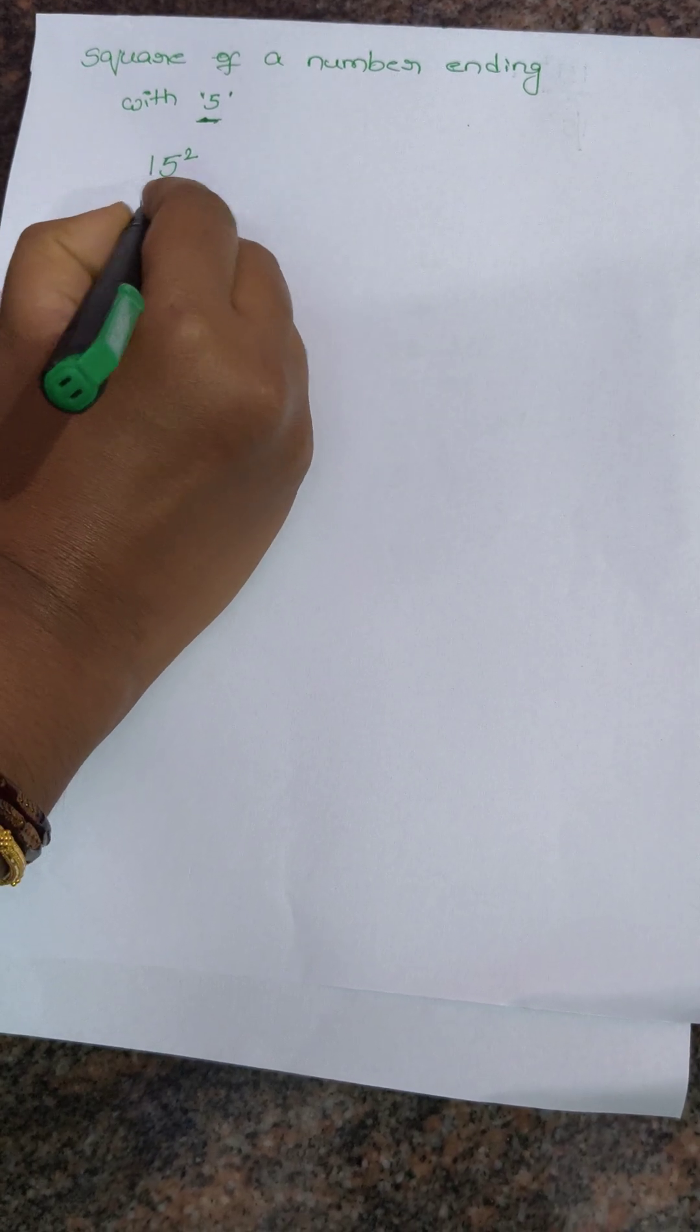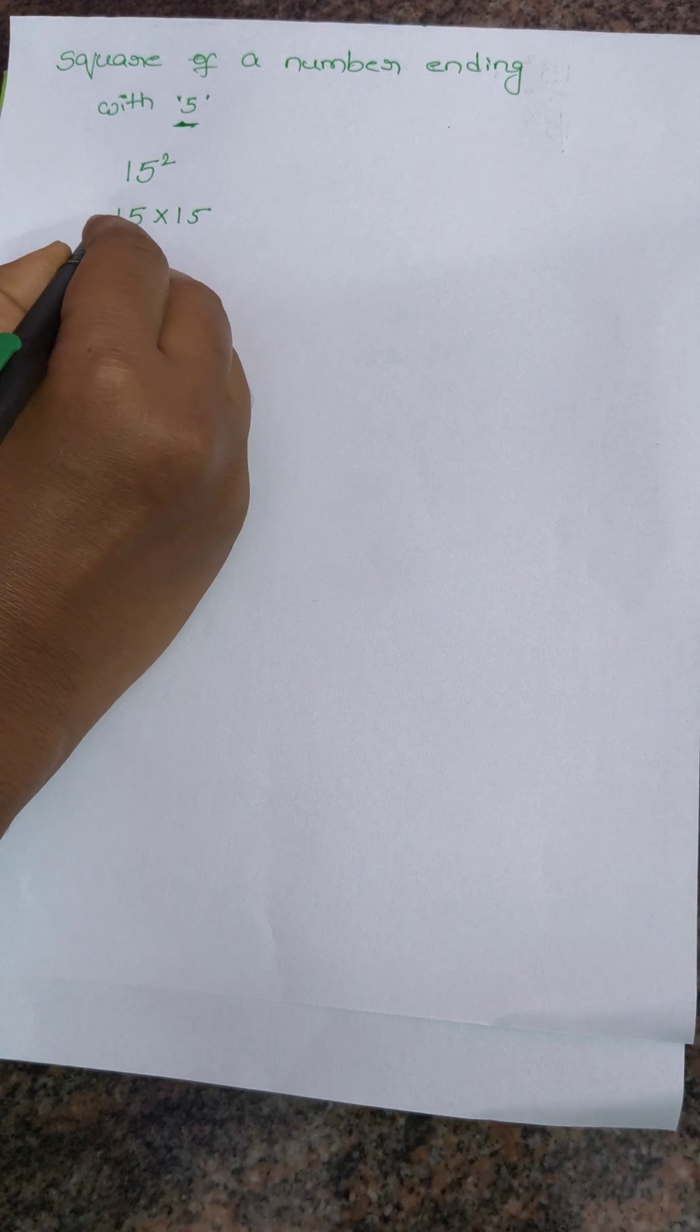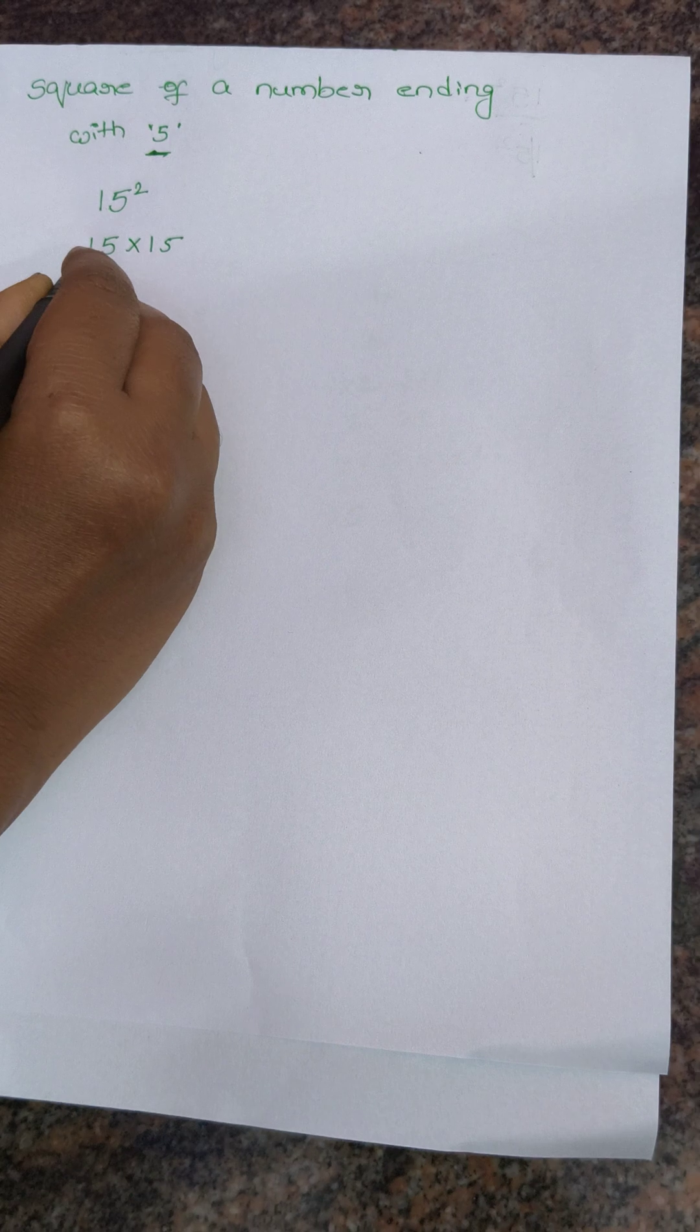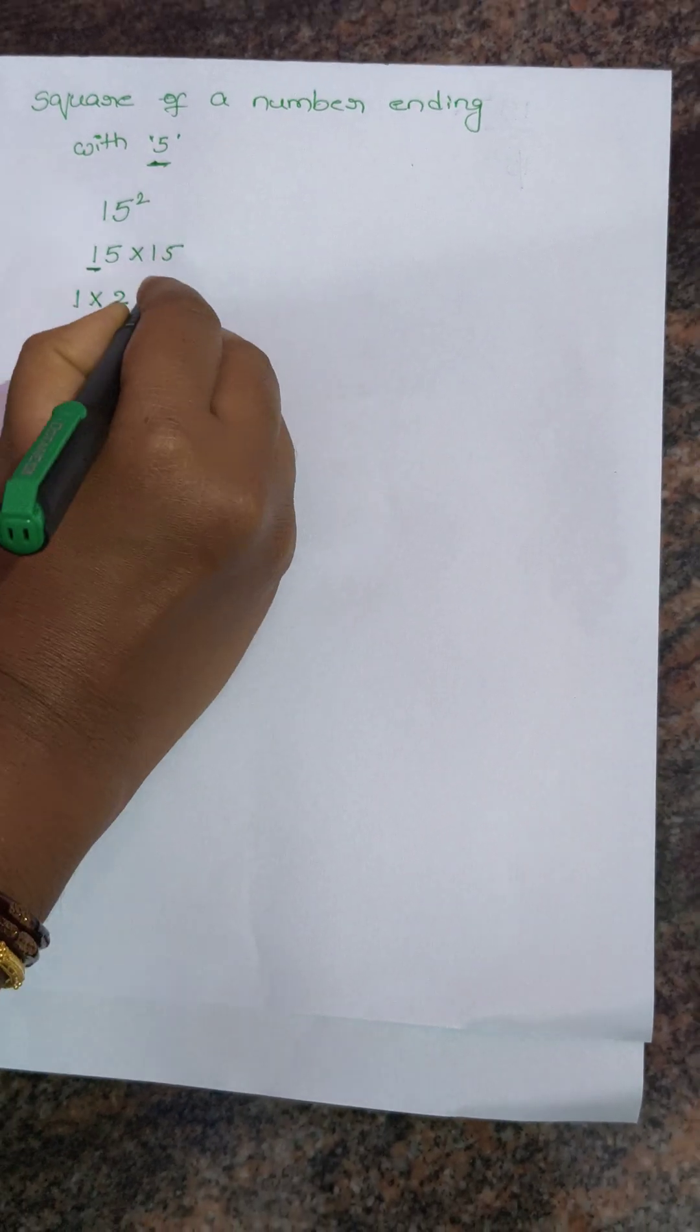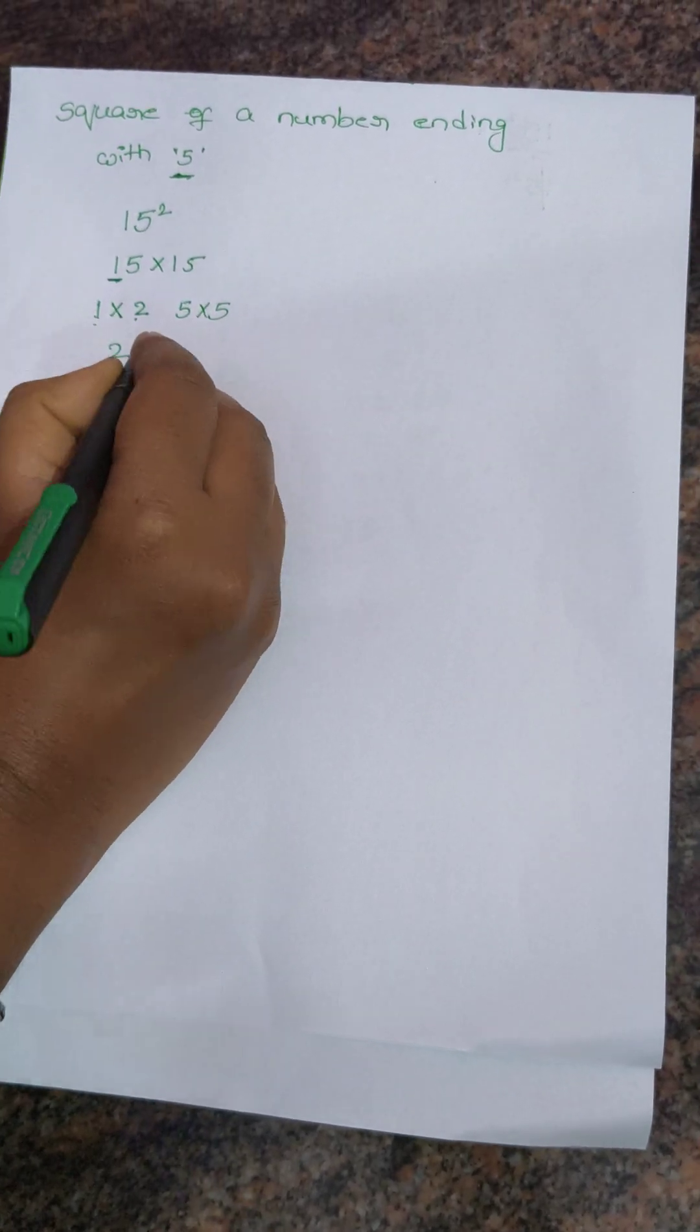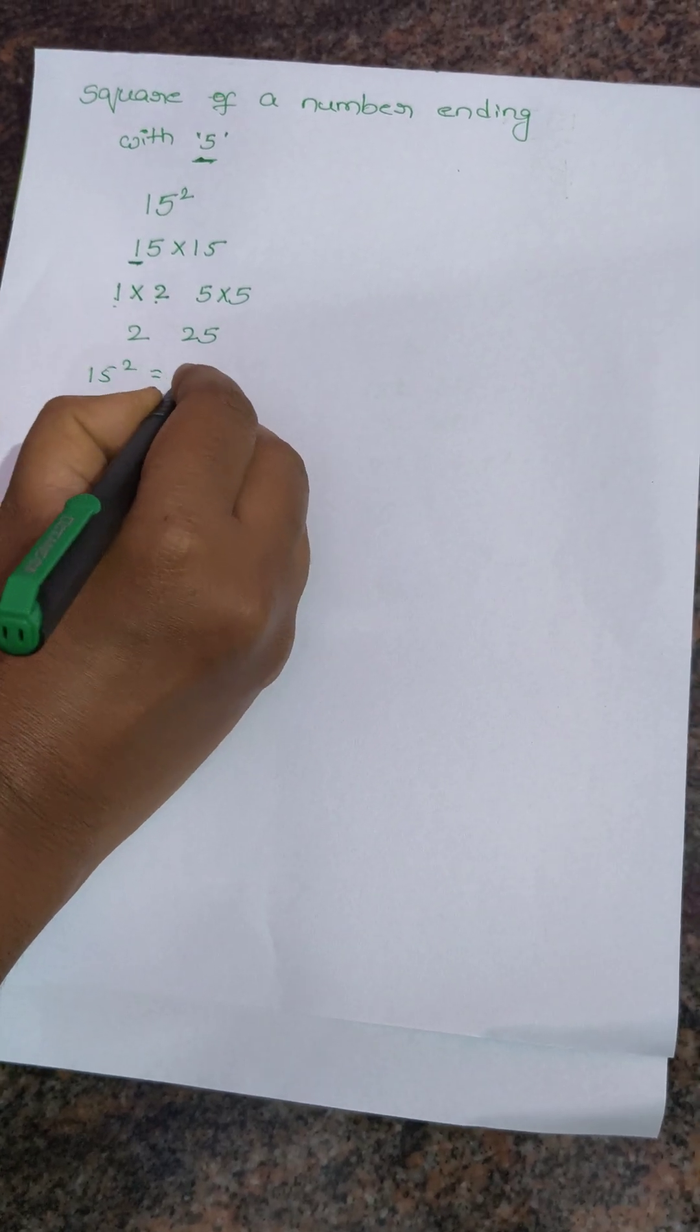See, 15 square means first we have to multiply the tens digit with the next number. What is the next number of 1? 2. We have to multiply 1 with 2 and we have to multiply 5 into 5. 1 into 2 is 2. 5 times 5 is 25. So 15 square value is 225.